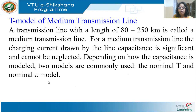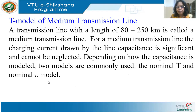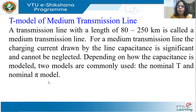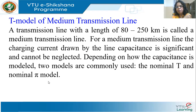Next, let us move on to the T model of medium transmission lines. The T model is one of two popular models for medium lines. Medium lines are normally between 80 or 100 to 250 kilometers. For this length, you cannot afford to neglect capacitance. If we neglect capacitance, we cannot account for the Ferranti effect or know how much the receiving end voltage will rise under light load conditions. So the capacitor has to be modeled. Based on how we model resistance, inductance, and capacitance, there are two popular models: the nominal T and the nominal pi models.